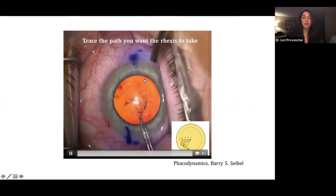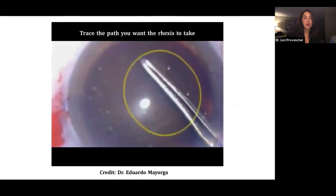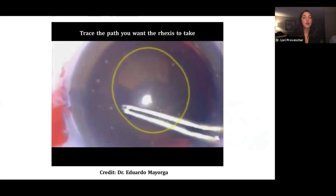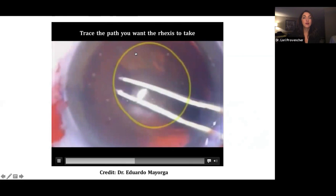It's really easy, I think, to get focused right at the crotch of the tear. And then you lose sight of where your utratas are going. And then later on, when the tear catches up to the utratas, your rexis has gone somewhere you don't want it to go. This is another example that I borrowed from Eduardo Mayorga. And this is a nice view with trypan blue, but you can see he's put a yellow circle here for you. You can see that the utrata tips are going here, tracing the path you want the rexis to take. And the rexis follows nicely.